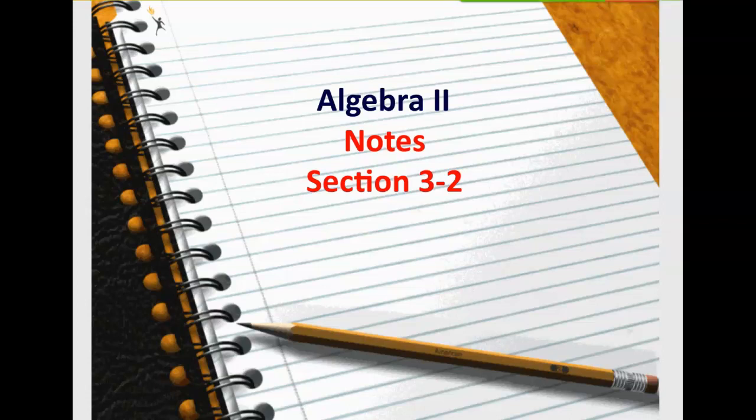All right guys, so let's get started. We are looking at section 3-2 today. For the past couple of days we have been focusing on solving systems of equations by graphing. What we've been doing is classifying a system as one of three types: independent intersecting with one solution, dependent where the lines were coinciding with infinitely many solutions, or inconsistent where the lines were parallel with no solutions. What we're going to do today is take those same concepts but apply them to solving systems using algebra.